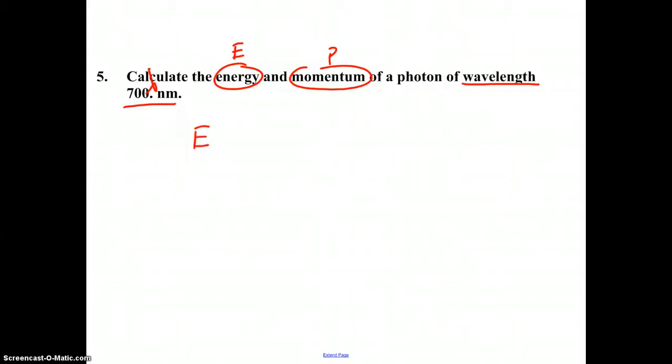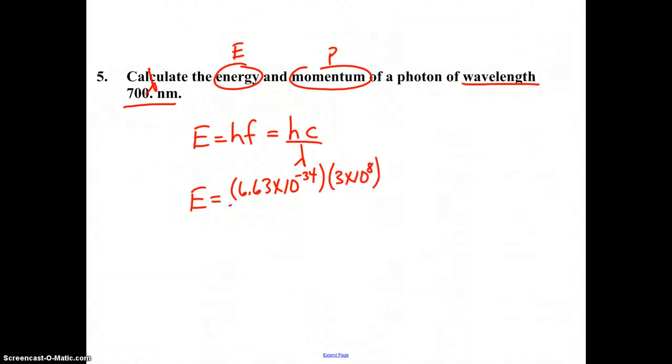This is fairly easy to deal with. We start with energy, that's hf, but as we mentioned in our analysis of number 1, we can use a shortcut: hc over lambda. E equals, this time we'll use the joule second form, 6.63 times 10 to the negative 34 joule seconds times 3 times 10 to the 8th divided by 700 times 10 to the negative 9. For our energy, we get 2.84 times 10 to the negative 19 joules.